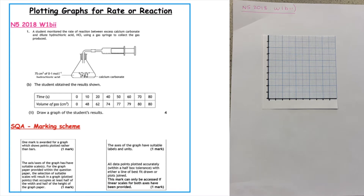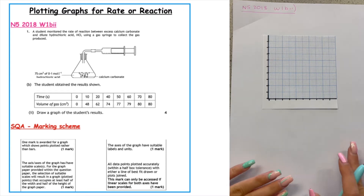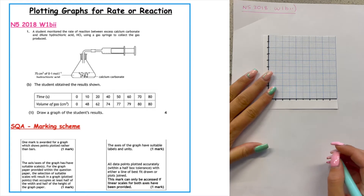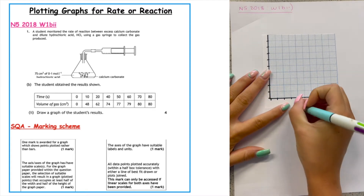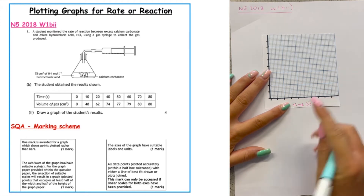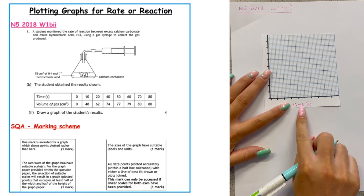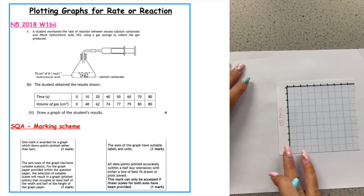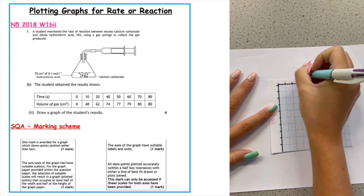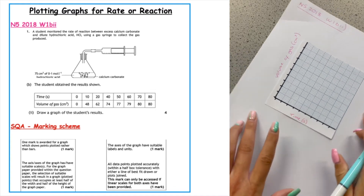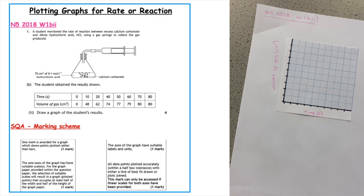The first thing we want to do is make sure we have the correct labels along the x and y axis. The x-axis is always the factor that we're in control of, and in this case that is time, measured in seconds. You always have to have the unit as well as the label. The volume of gas goes on the y-axis, measured in centimetres cubed. Extracting these two labels plus units from the table gets you one mark at National 5.